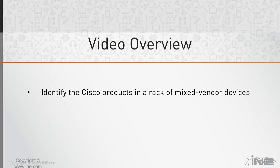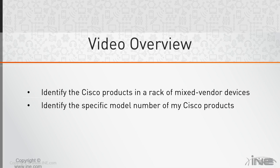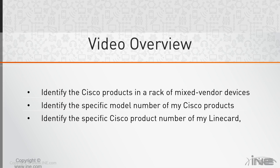If I have a rack of mixed vendor devices, how do I identify the Cisco devices in that rack? How do I identify the specific model number of my Cisco products just by visually inspecting or looking at them? And how can I identify the specific Cisco product number of my line card, port adapter, or network module?